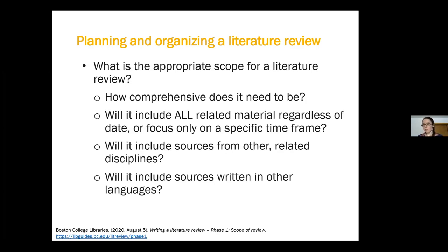Defining your scope early on in your research process is going to be really important. Having an idea of what you're looking for, what your criteria are, and what limitations you're placing on your literature searching from the beginning will help you manage that process. When you're doing a lit review it can be a bit intimidating because you might come across hundreds of articles. Knowing your scope from the beginning will help you manage the process and help you report on it within your lit review or the methods section of your research article.